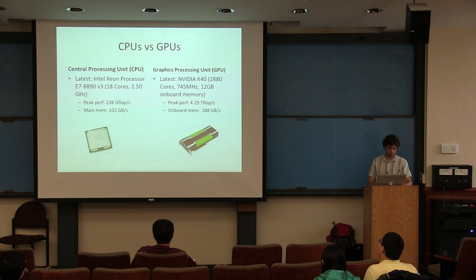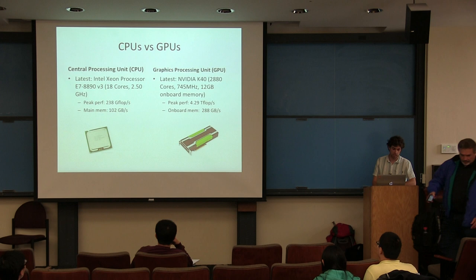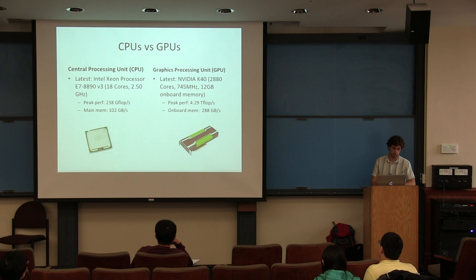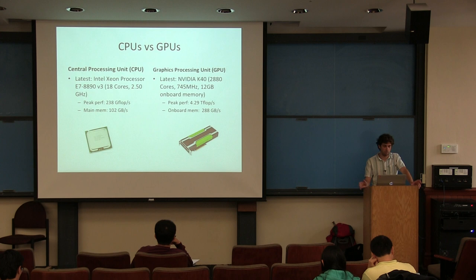Now let's see how we can actually use GPUs to speed things up. A CPU typically operates at high frequency, has a small number of cores, but each core can do a fixed number of operations per clock cycle. A GPU operates at lower frequency but has way more cores. For the latest Intel CPU, peak performance is about 238 gigaflops. On the latest NVIDIA GPUs you get about 20 times that in floating point operations, as well as higher memory bandwidth.